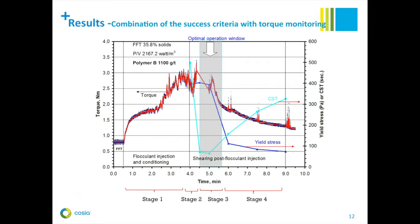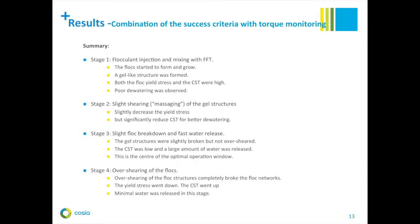This summarizes the four stages we observe. Stage one is flocculant injection. Stage two is slight shearing or massaging of the gel structure, which helps water release. Stage three is slight floc breakdown with fast water release — that is the operation window you need to control when using a dynamic mixer or inline static mixer. You use these four criteria to judge performance based on the samples you collect. Stage four is overshearing — if you overshear, you kill the flocs and dewatering becomes very difficult.